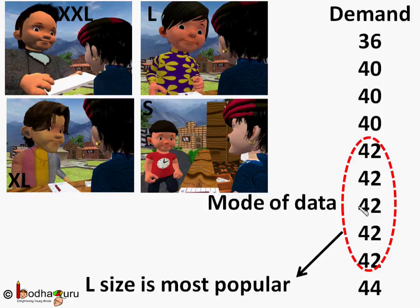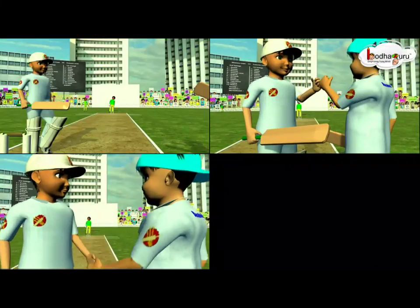As we can see, 42 size has the most occurrence, 5 occurrences. So this size, 42, is asked by most of the people. So this becomes the mode of the data. This is an example of ungrouped data.